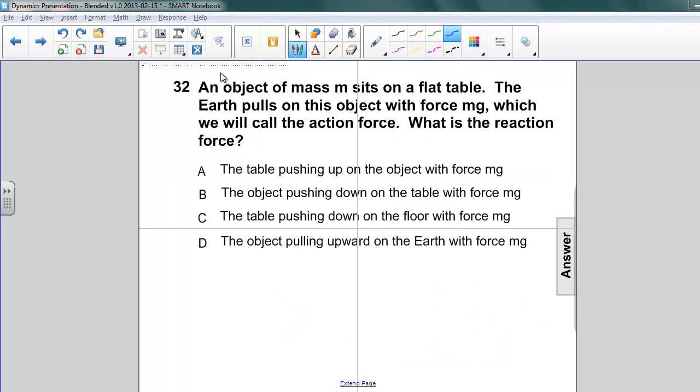Let's test your understanding of Newton's third law. Here's a question: An object of mass m sits on a flat table. The earth pulls on this object with force mg, which we call the action force. What is the reaction force? A, the table pushing up on the object with force mg. B, the object pushing down on the table with force mg. C, the table pushing down on the floor with force mg. Or D, the object pulling upward on the earth with force mg.